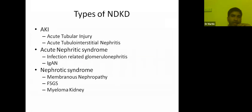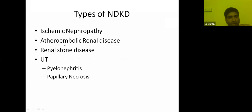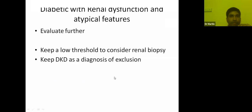Common types of non-diabetic kidney disease include: acute kidney injury such as acute tubular injury and acute tubular interstitial nephritis; nephritic presentations like infection-related glomerulonephritis or IgA nephropathy; nephrotic syndrome presentations including myeloma kidney; ischemic nephropathy; atheroembolic renal disease; renal stone disease; urinary tract infections — including complicated UTI with pyelonephritis or papillary necrosis. Whenever you encounter atypical features, keep your threshold low for a renal biopsy and keep diabetic kidney disease as a diagnosis of exclusion.